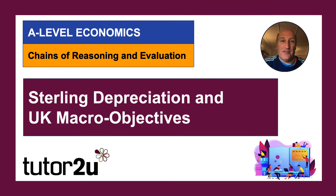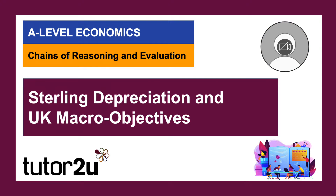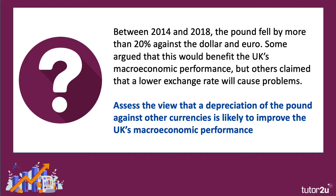Hi there, welcome. It's Jeff Pack again with another in a series of chains of reasoning essay plans, walking through a question and a topic, trying to highlight some areas in which you can get great marks for analysis and strong marks for evaluation to boost and smash that grade. This time, let's spend a few minutes looking at the question about exchange rates, depreciation of a currency, and the consequences for macro objectives. Between 2014 and 2018, the pound fell by more than 20% against the dollar. Assess the view that the depreciation of the pound against other currencies is likely to improve the UK's macro performance.